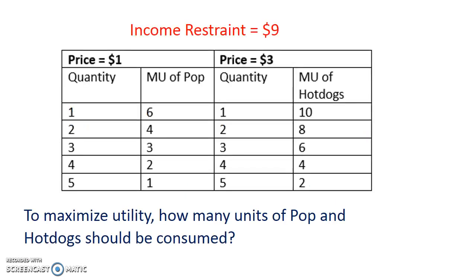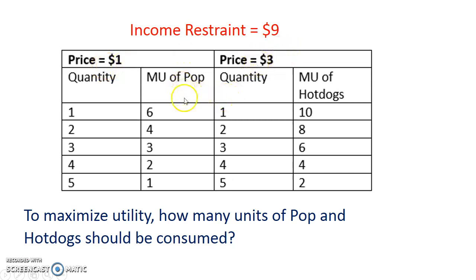Most utility maximization type of problems give you some form of a chart. In this case, we have two goods: pop and hot dogs. In this chart, you can see the quantities being consumed, the price that each is being sold at, and the marginal utilities that go along with it.